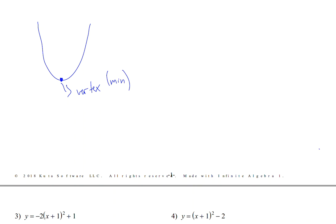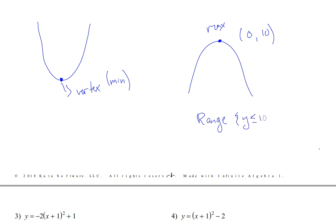If our parabola is opening down, then the range is going to be all of the y values that are less than or equal to that y value. For example, if your vertex was at (0, 10) and it was opening down, then your range would be everything less than or equal to 10 because that is now the maximum value of the function — so y is less than or equal to 10. That's it for this video. Enjoy the problems — we'll see you next time.